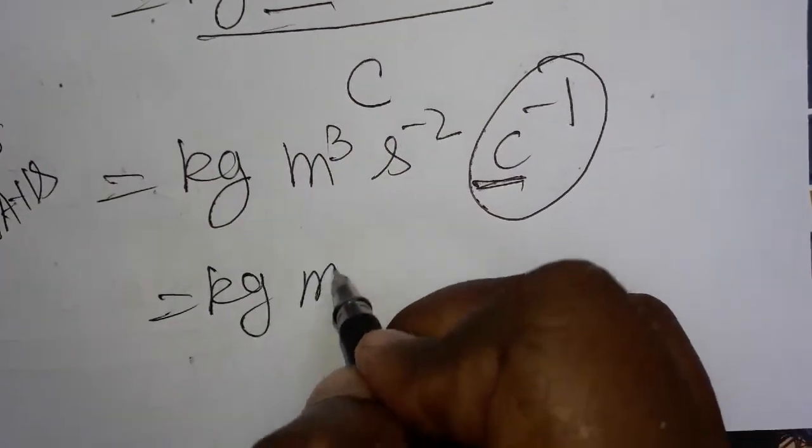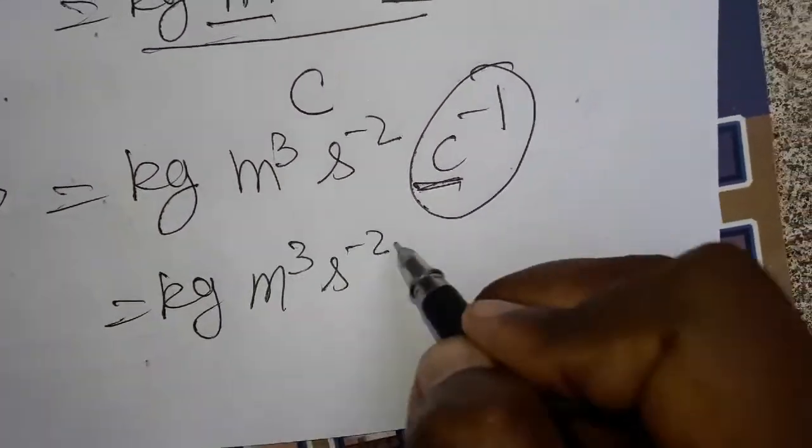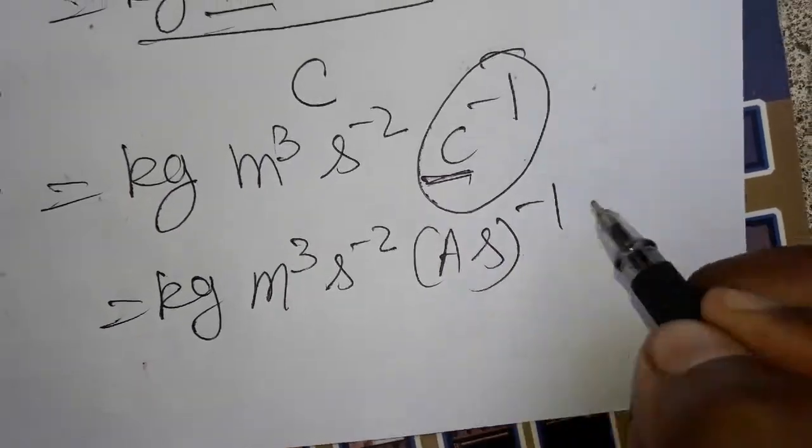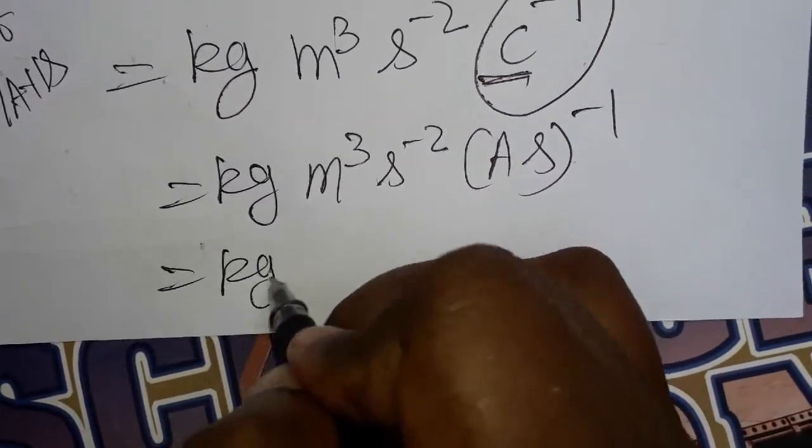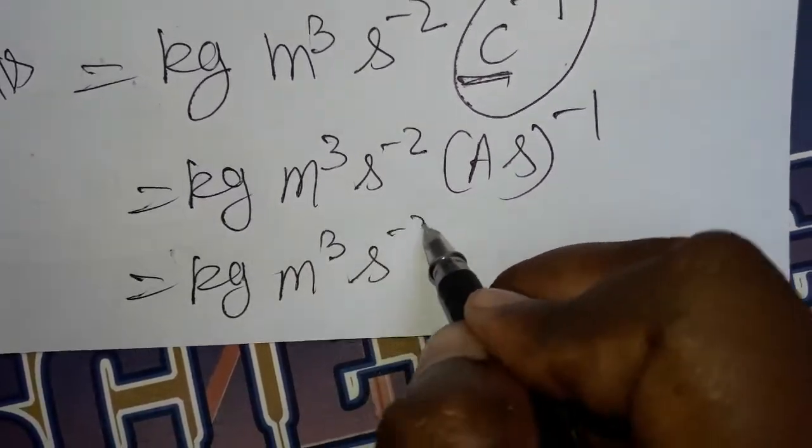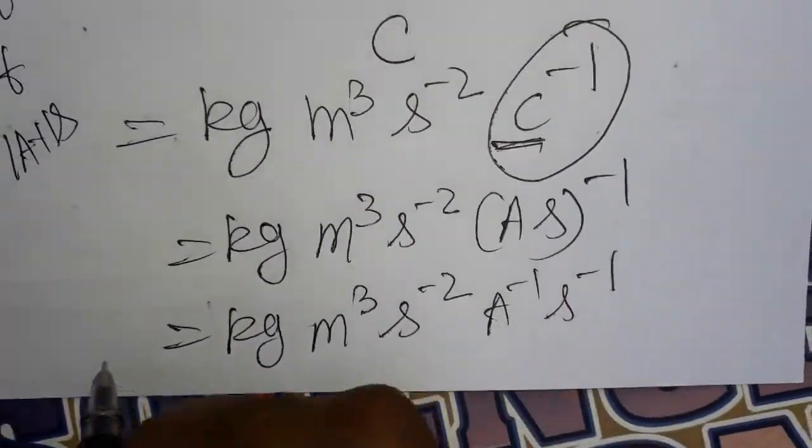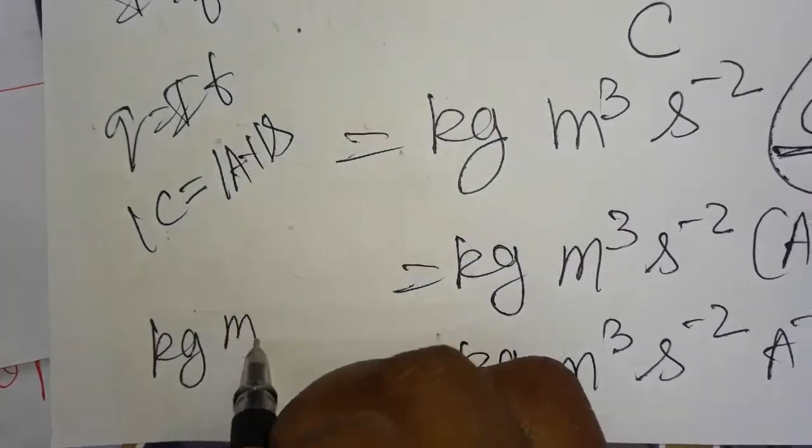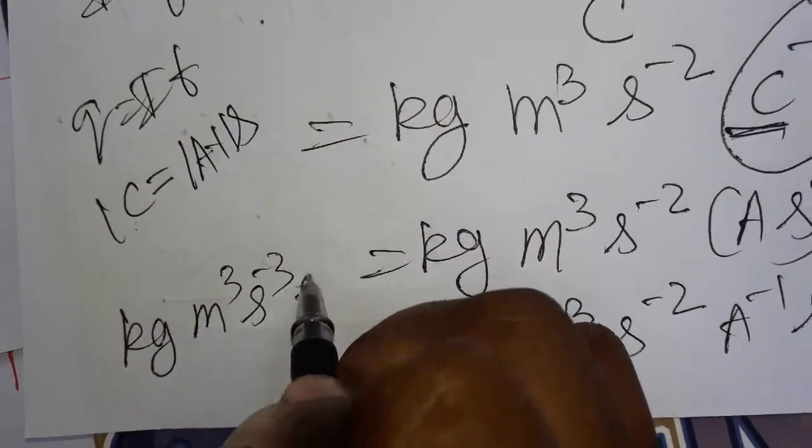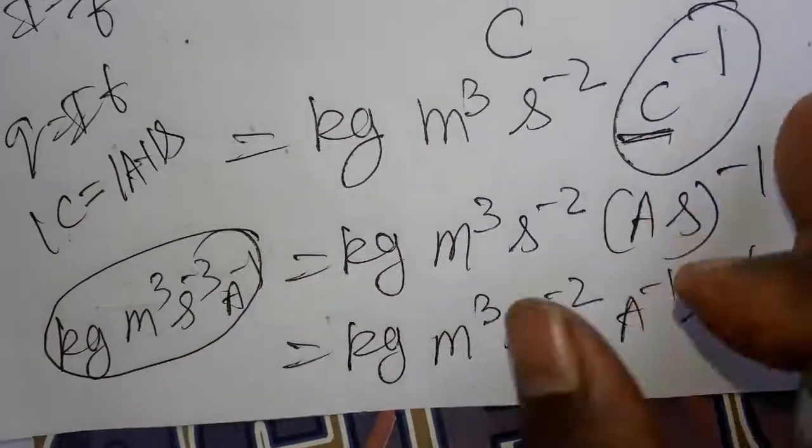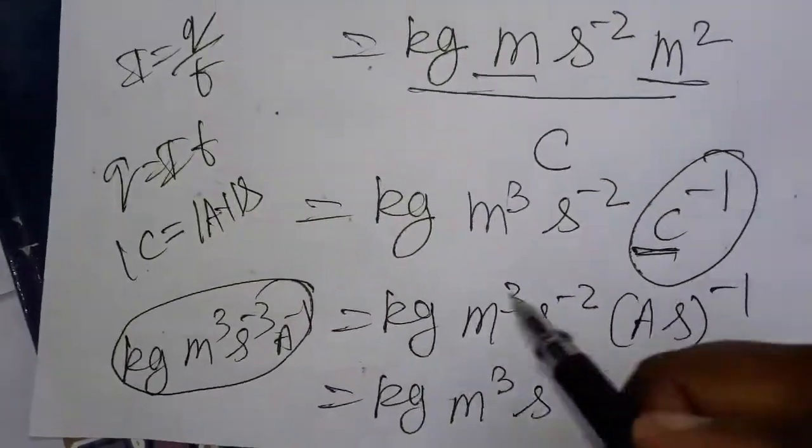So kg meter cube second minus 2 ampere into second inverse. Finally we will get kg meter cube second minus 2 ampere minus 1 second minus 1. So we get kg meter cube second minus 3 ampere inverse. This is the final unit of electric flux.